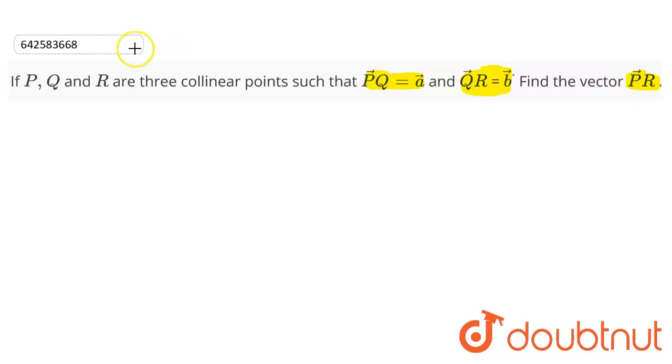Since these are collinear points, that means they lie on a line. So let us draw the line.